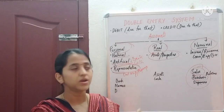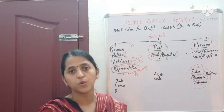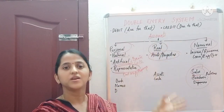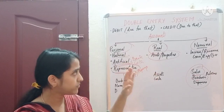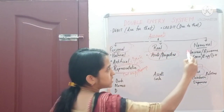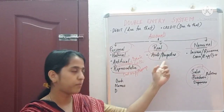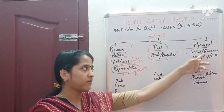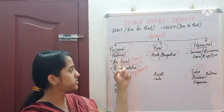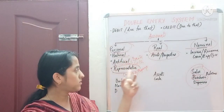To record in a journal, we must know which type an item is — whether it is a personal account, real account, or nominal account. Only then can we determine which item to debit and which to credit. Personal account means accounts of persons, real account means assets or properties of the business, and nominal account means income, revenue, gain, expense, or loss.